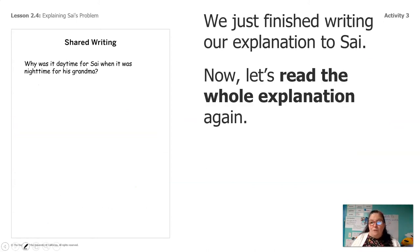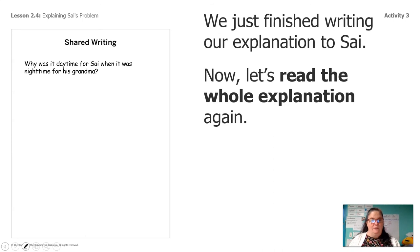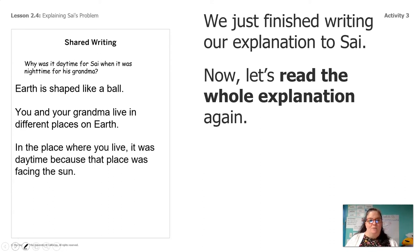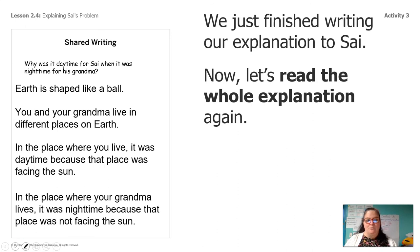Now we're going to put all those parts together and read the whole explanation. Ready? The earth is shaped like a ball. You and your grandma live in different places on earth. In the place where you live, it was daytime because that place was facing the sun. And in the place where your grandma lives, it was nighttime because that place was not facing the sun. Nice work!